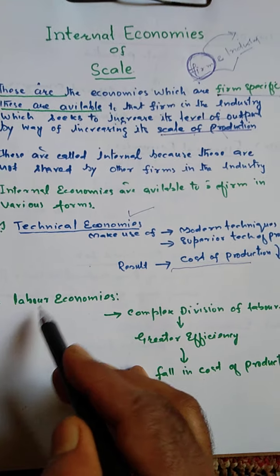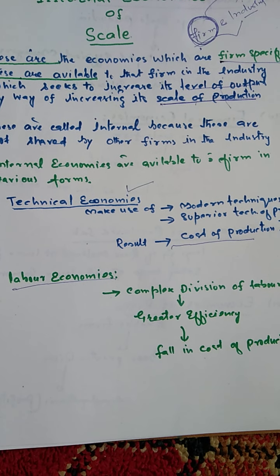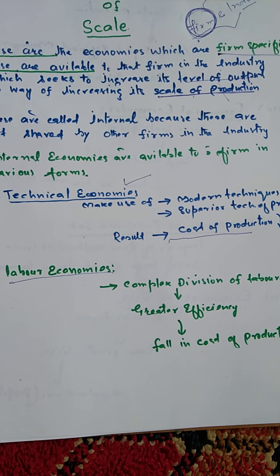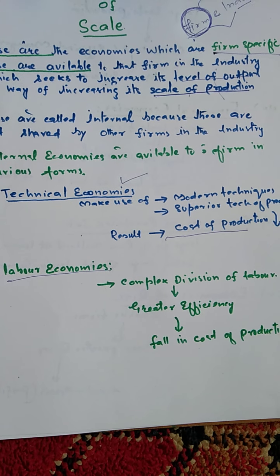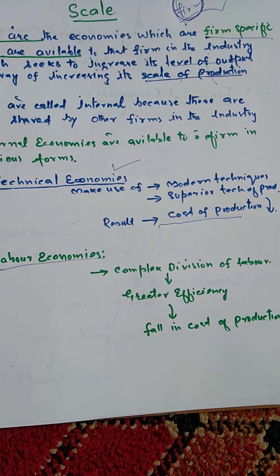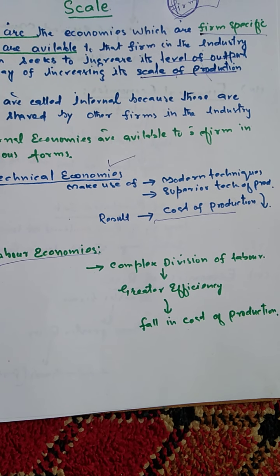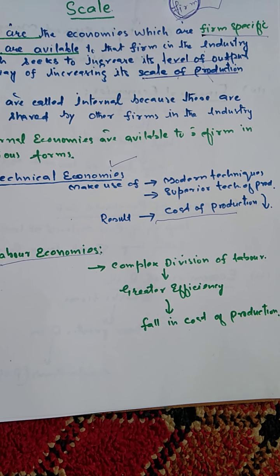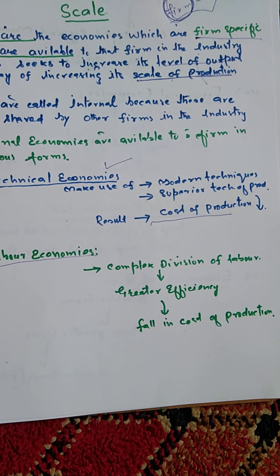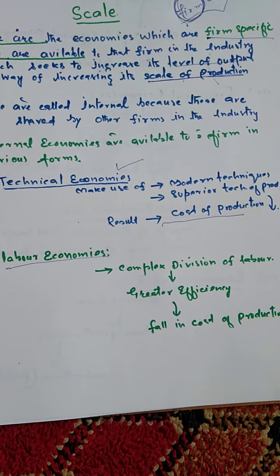Then we have labor economies. Jab ek firm shift hoti hai from small scale to large scale, us ke liye mumkin ho jata hai ke complex division of labor adopt kare. Division of labor mein poore work aur process ko divide kiya jata hai among different units of labor on the basis of specialization. Division of labor ki khoobi hai it results in greater efficiency of labor, aur jab efficiency of labor badh jaye to cost of production kam hota hai.